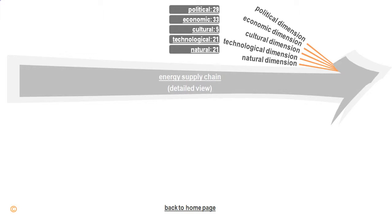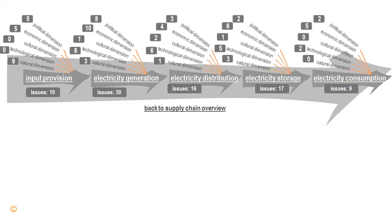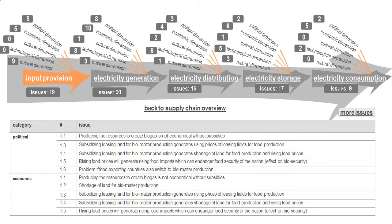If we zoom into the supply chain as a whole, we can see that all the links within the chain are also multidimensional and have their dimension-related issues. By zooming into any of the links — for example, input provision — we can look at it in more detail and see the list of categorized issues.